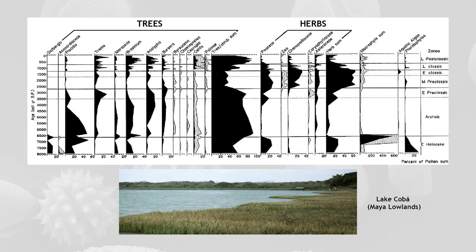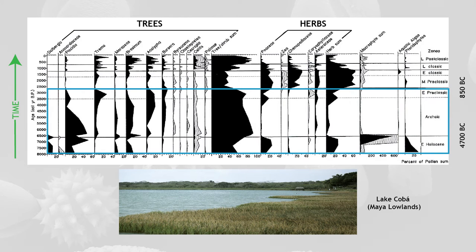This is a pollen diagram from Lake Coba in Yucatan. And you see the lake itself. And you see the pollen record of the last about 5,000 years. So you read the pollen diagram always from the bottom to the top. And at the bottom of the record, you see the forest composition. The black parts of the record, and it are certain families that make up the forest.